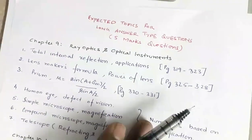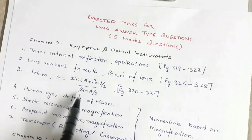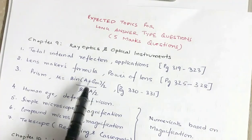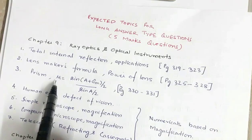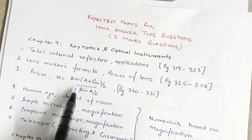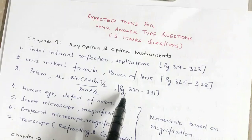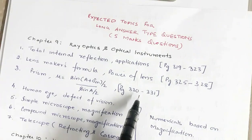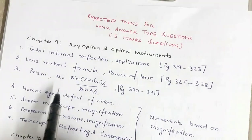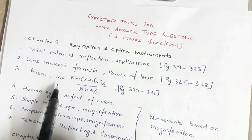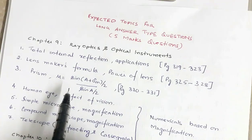Then there is the prism — a quite common and often repeated but very important derivation: refractive index μ = sin((A + δm)/2) / sin(A/2). This is given on page numbers 330 and 331. In the exercise based on prisms there are two questions: one on deviation without dispersion and one on dispersion without deviation — you should go through those as well.